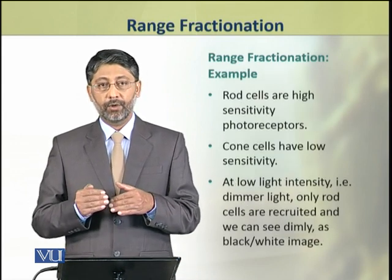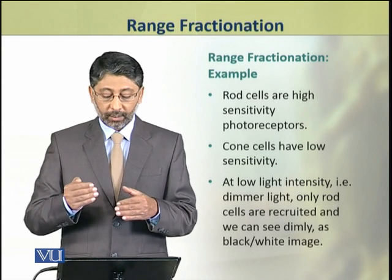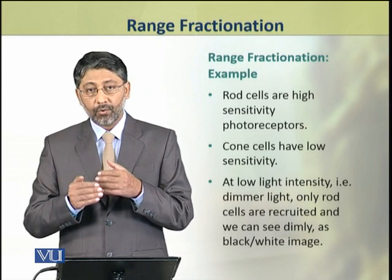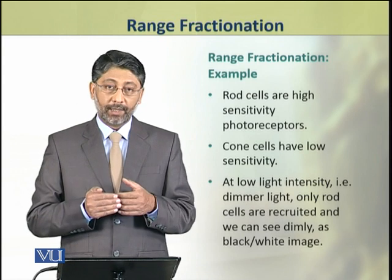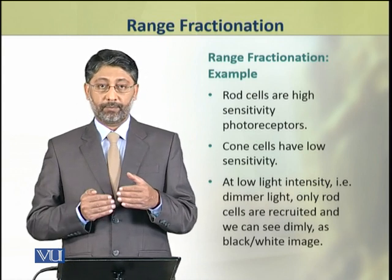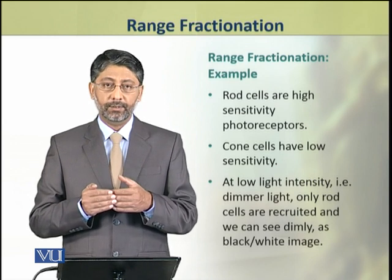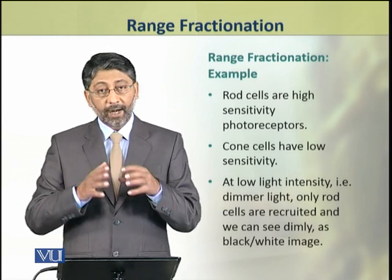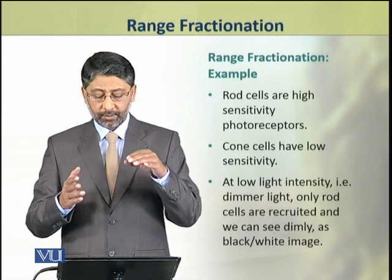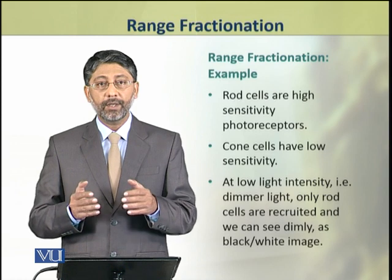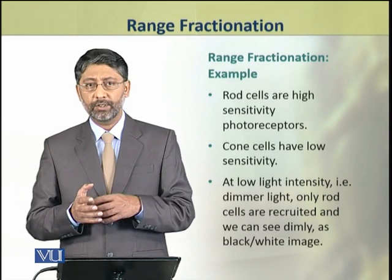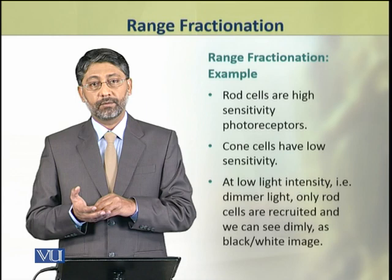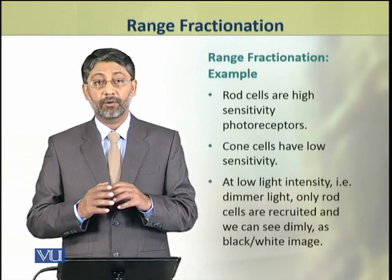Dear students, we shall take an example of the photoreceptors, which are the rod and cone cells. The cone cells have low sensitivity, while the rod cells have high sensitivity for the stimulus of light. At low intensity, that is dimmer light, only rod cells are activated, which are highly sensitive. As a result, we can see dimly — that is, only black and white — achromatic vision.